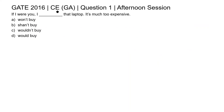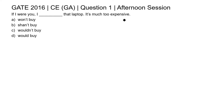This is question one of civil engineering general aptitude section of GATE 2016 afternoon session. The sentence is: 'If I were you, I blank that laptop — it's much too expensive.' There are four options given and we need to select the correct one.